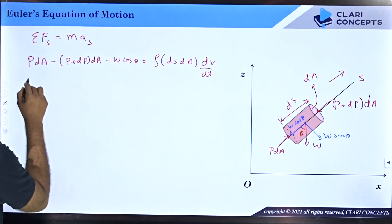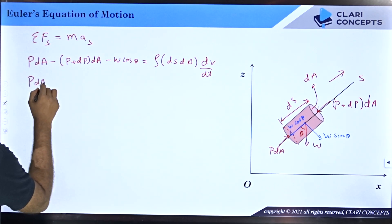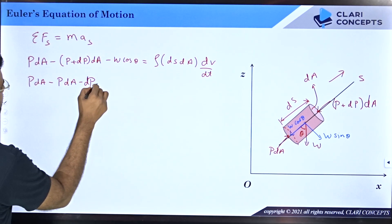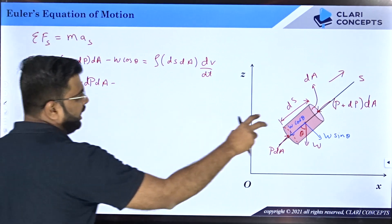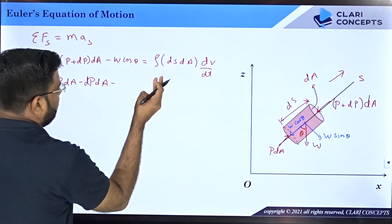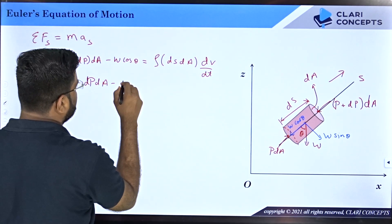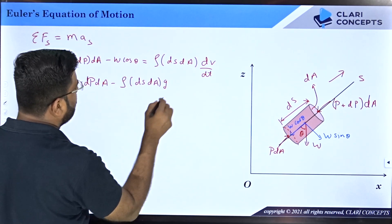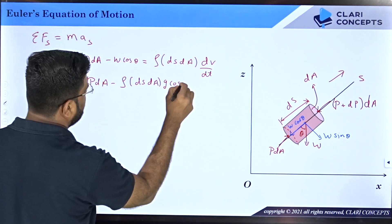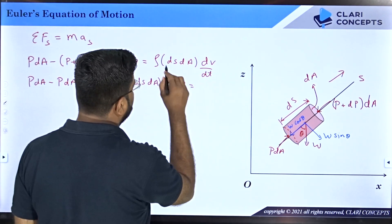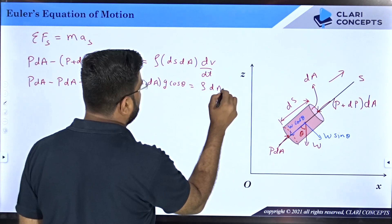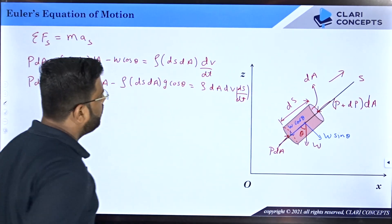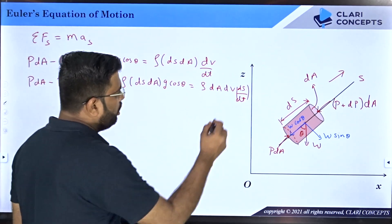If you open this bracket, you get P dA minus dP dA minus W. What is W? Weight of the element, which is mass into gravitational acceleration. Mass is density into volume, that is rho dS into dA into g, and then cos theta equals rho dA dV. I'll put dS by dt. This is just change of the variables.